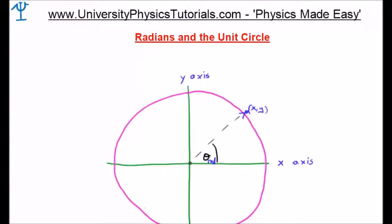Now that we have discussed the concept of radians, it's time to move on to the unit circle. Because I'm introducing the concept of radians, I'm still going to use both degrees and radians to describe the various angles in the circle.